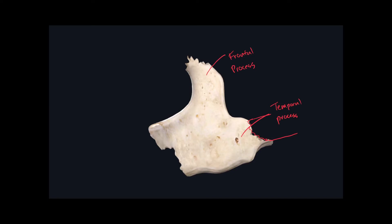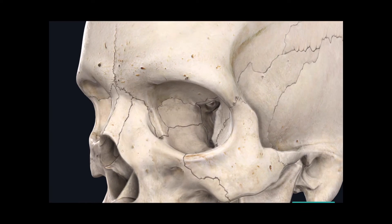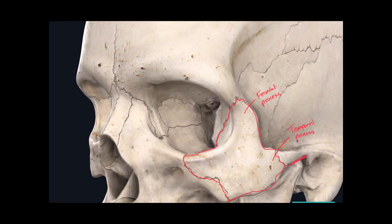Now let's look at the zygomatic bone when it's articulating with the rest of the bones around it. Here we have the zygomatic bone along with all the other bones, and again we can see the frontal process and the temporal process, as well as the zygomatic process of the temporal bone.